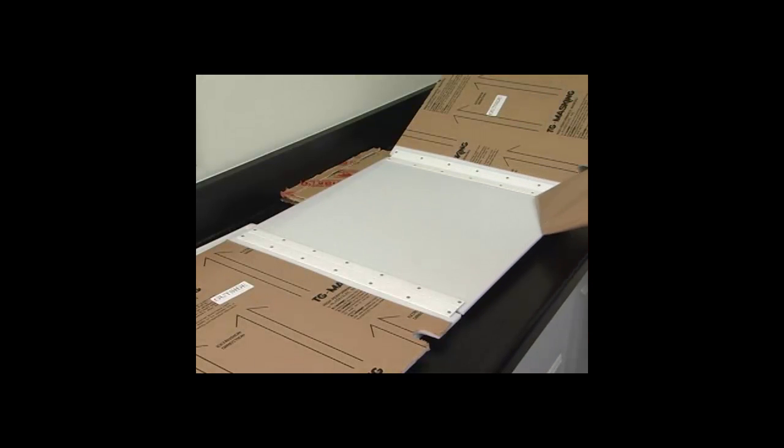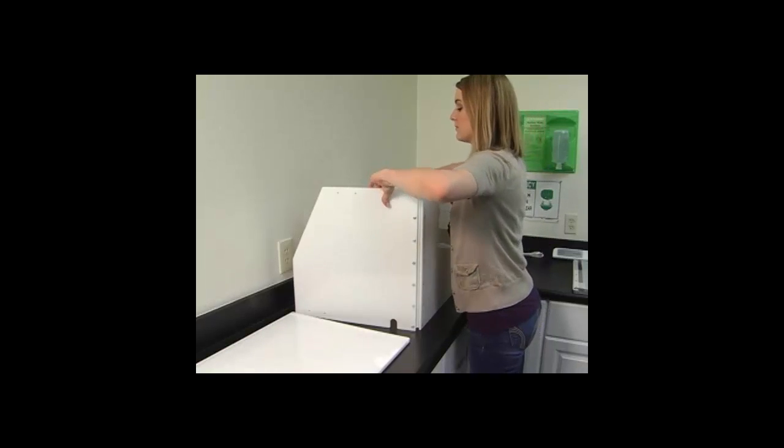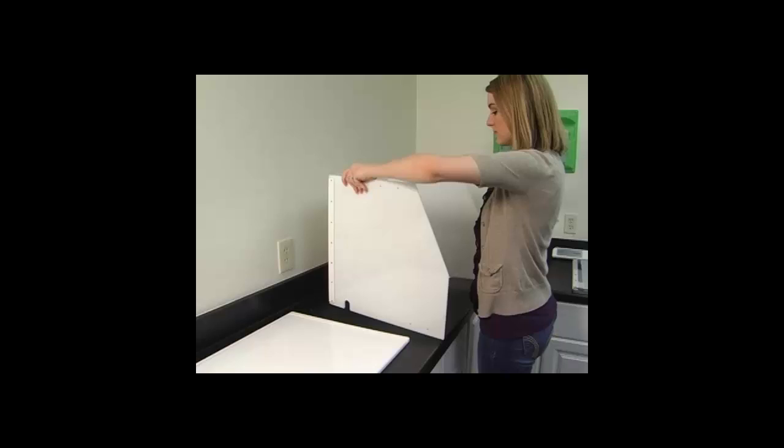Once you have removed all the parts from the packaging, remove all of the brown adhesive covers from the hood's panels. Then place the base of the hood on a solid stationary surface with the groove side up.